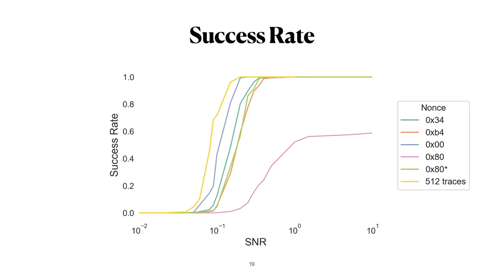And then we also show here in the yellow line that if you have 512 traces instead of 256 at your disposal, then you can always select the optimal subset of 256 traces that start with the best case nonce. And then you have this success rate.